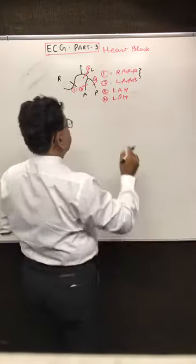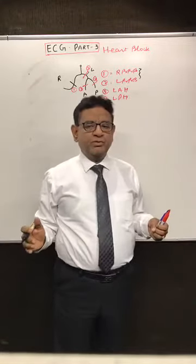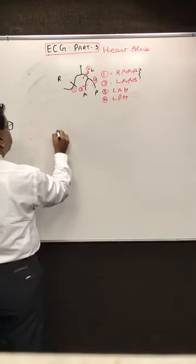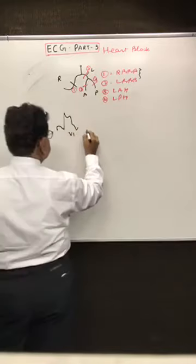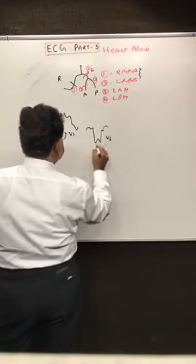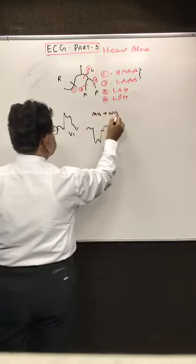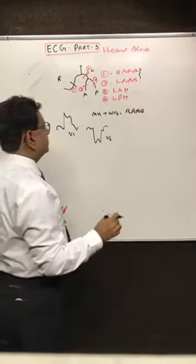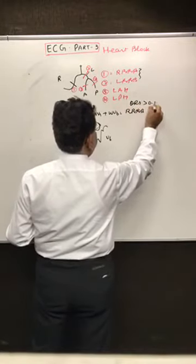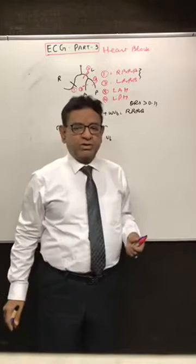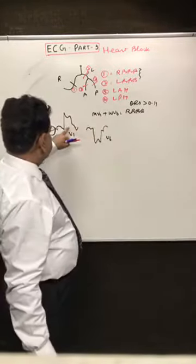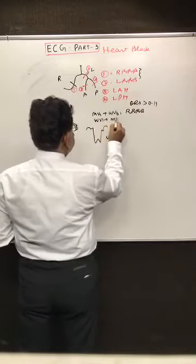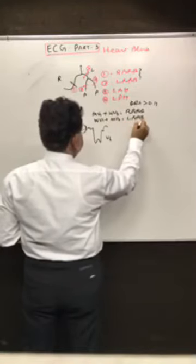For a quick revision of RBBB and LBBB: if you see an M pattern in V1 and a W pattern in V6, this is right bundle branch block — with QRS interval more than 0.11 seconds. M in V1 and W in V6 is RBBB. But if you get W in V1 and M in V6, that is LBBB.